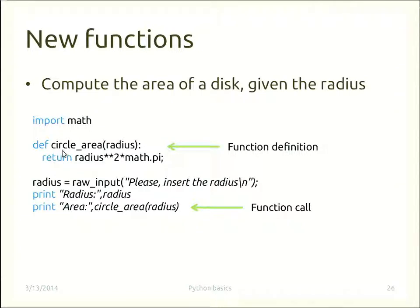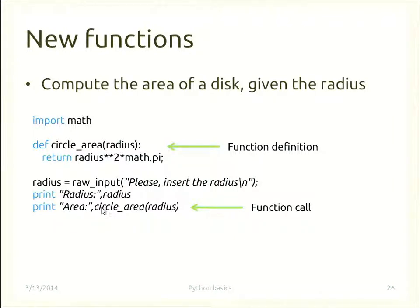Here is an example: computing the area of a disk given its radius. We import math as a module, then define a function 'circle_area' that accepts one argument called radius. The function body is indented and computes radius squared times math.pi — where math.pi is the pi constant defined in the math module. This result is returned. The program then prompts the user for a radius, reads the input, and calls circle_area(radius) to print the result.